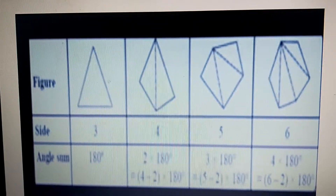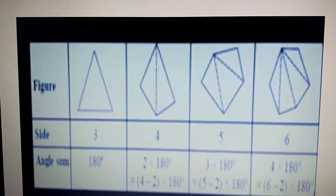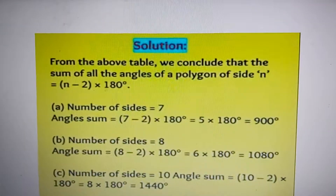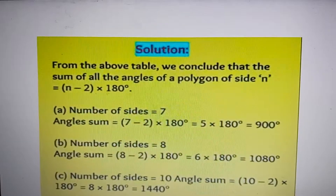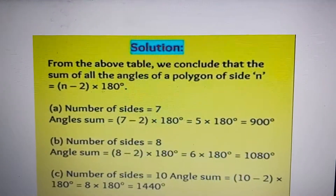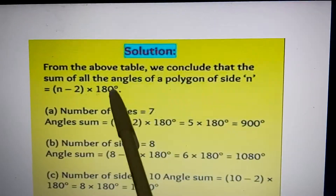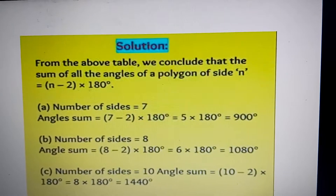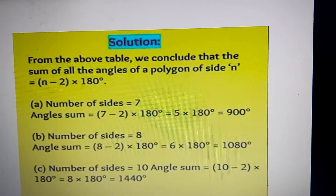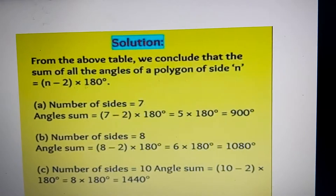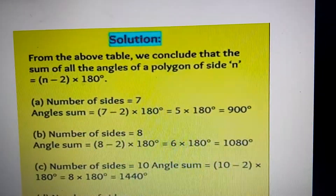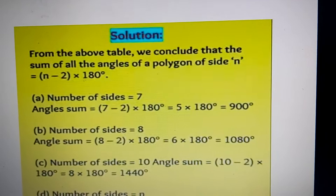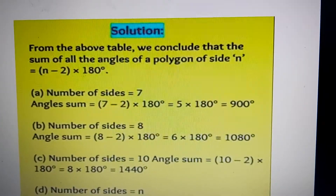Before we move ahead, if you have to find the sum of the angles of a polygon, there is a simple formula: (N minus 2) into 180 degrees. N minus 2 is nothing but the number of triangles forming in a polygon, multiplied by 180 degrees. N is the number of sides in the polygon.